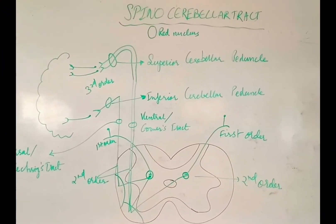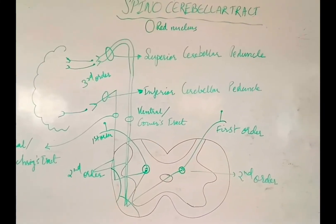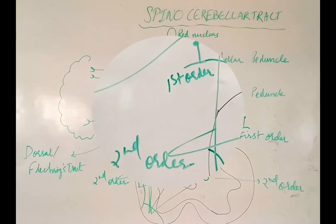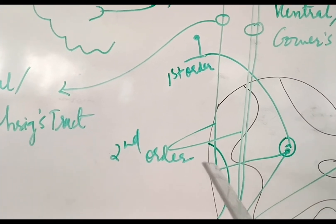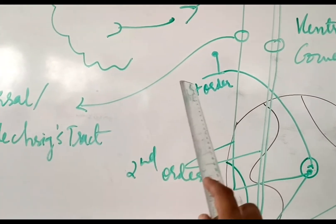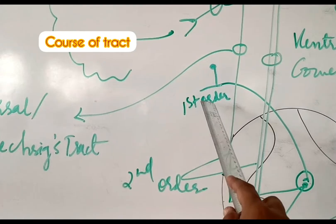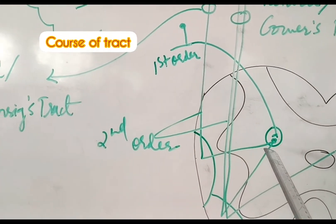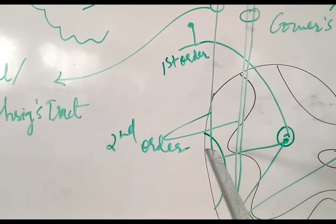So this is the diagram which depicts the whole of the spinocerebellar tract. Let's begin with the course of the tract. As you can see, this is the first order of neuron which is present in the dorsal root ganglion. From here, the fibers enter the spinal cord where they synapse with Clarke's column and bend laterally.